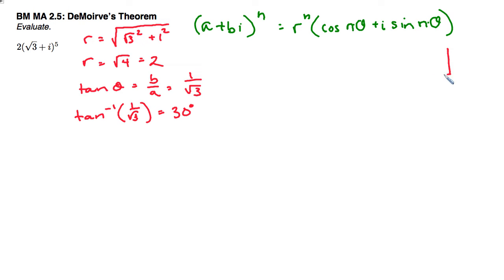So actually I'm going to draw that over here, because I will use that later. 30 degrees, 1, square root of 3, and that's going to be 2.